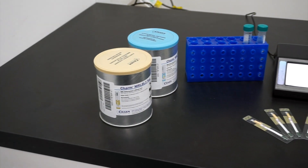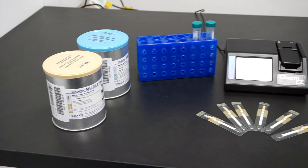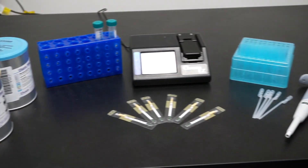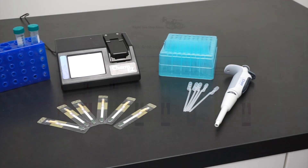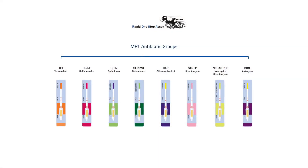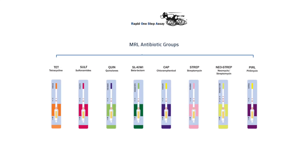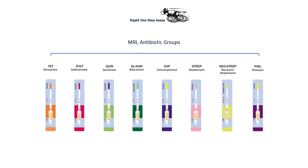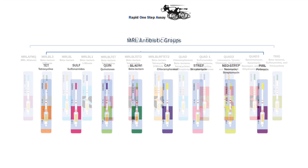Charm Rapid One-Step Assay test strips for dairy provide a solution to ensure that milk complies with maximum residue limits for antibiotic residues. The range of tests covers all the major groups of antibiotics used in the dairy industry, such as beta-lactams, quinolones, and sulfonamides, amongst many others.